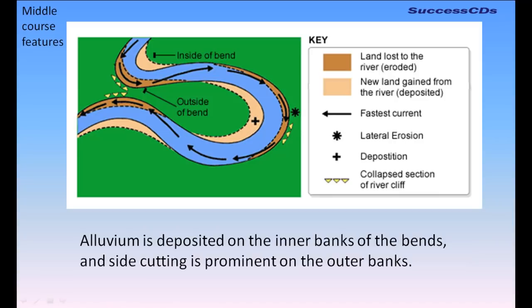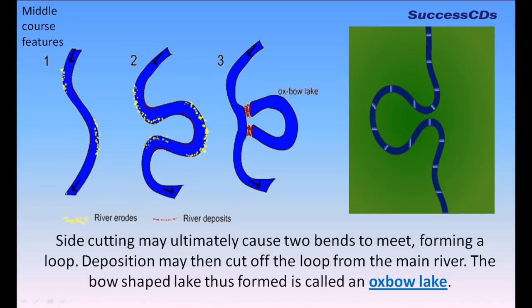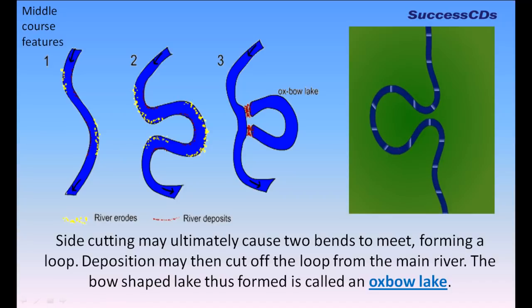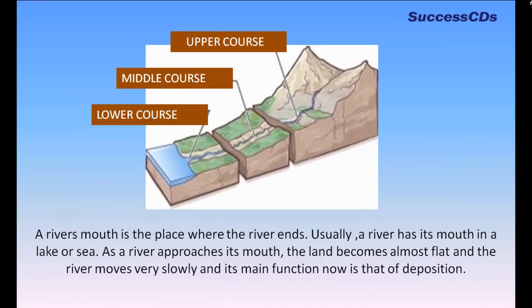Alluvium is deposited on the inner banks of the bends and side-cutting is prominent on the outer banks. Side-cutting may ultimately cause two bends to meet, forming a loop. Deposition may then cut off the loop from the main river. The bow-shaped lake thus formed is called an oxbow lake.